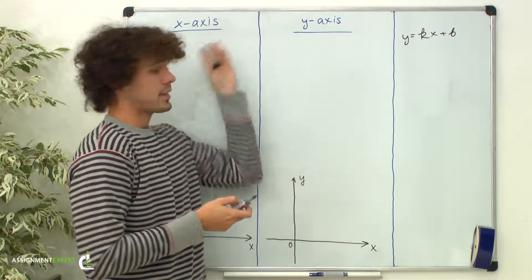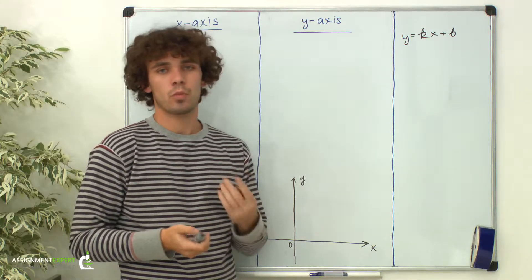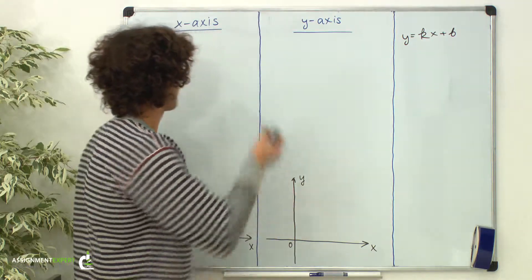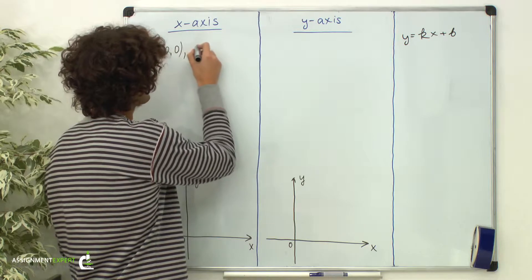Let's begin with the x-axis. To write an equation of any line, we need to have two points. Let's for example pick points (0,0) and (2,0).